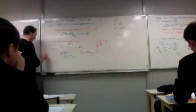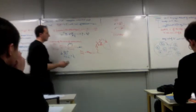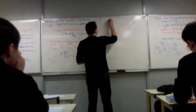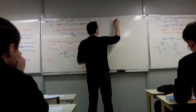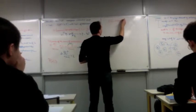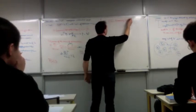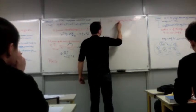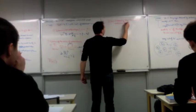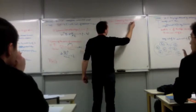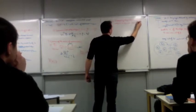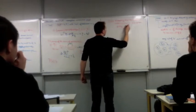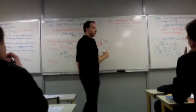Let's define P of n to be the probability that the algorithm outputs a min cut on a graph of size n vertices.